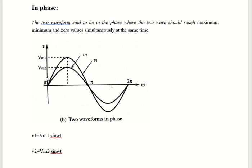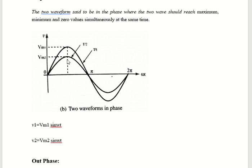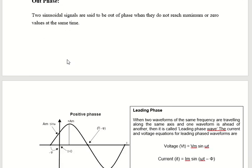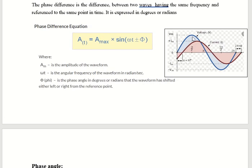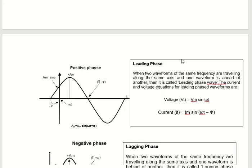There are two types of phase components: in-phase and out-of-phase. In-phase means the two voltage waves have different magnitudes but both start at the same point. The instantaneous value of V1 is Vm1 sin(ωt) and V2 is Vm2 sin(ωt), so there is no phase shift. The two waves are said to be in phase when they reach their maximum, minimum, and zero values at the same time. Out-of-phase means the two waves do not reach their maximum or minimum at the same time, as we saw in the phase difference example.